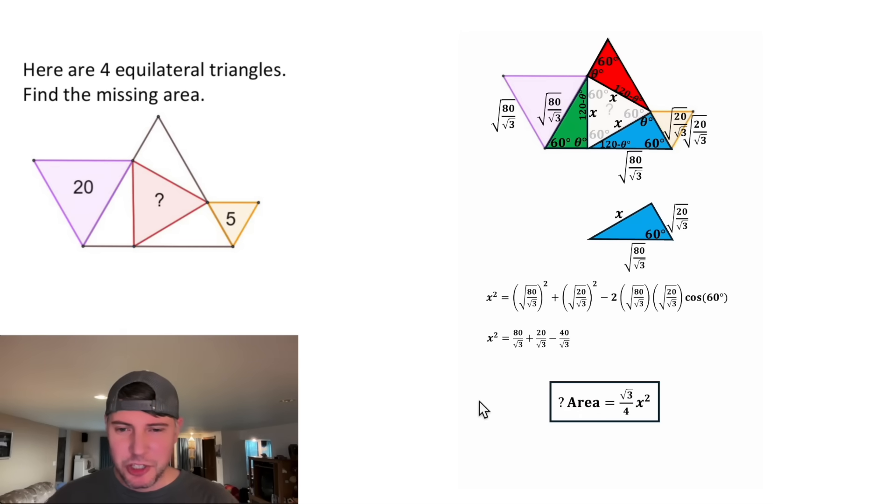Now let's smush everything together. All three of these fractions have the same denominator, so we can write it as a single fraction. And 80 plus 20 minus 40 is equal to 60. Now we have the value of x squared.